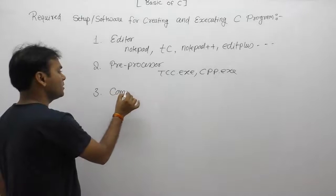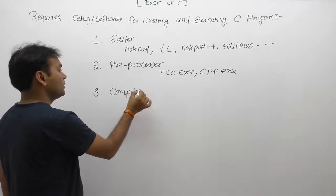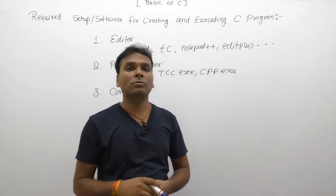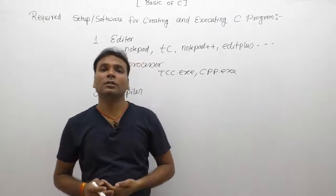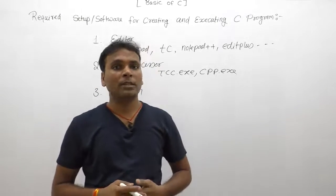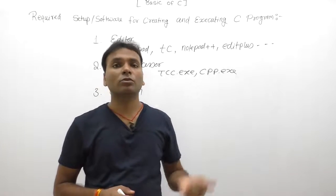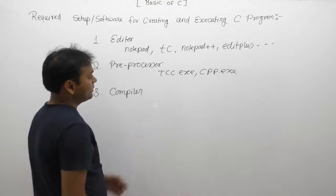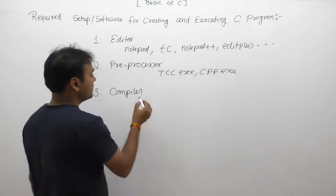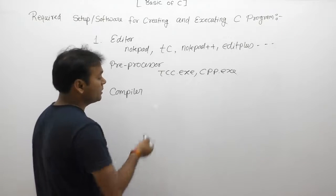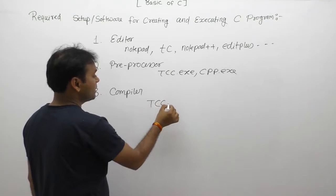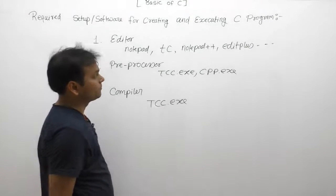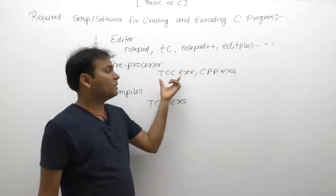The third required tool after pre-processing is compiler software, which is responsible for translating source code into equivalent machine code. In the case of Turbo C, the compiler is supplied in the form of tcc.exe, where TCC stands for Turbo C Compiler. Generally, the TCC package supplies three types of tools: the preprocessor, compiler, and linker.